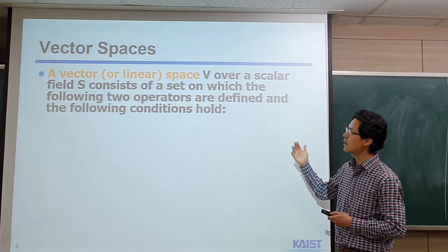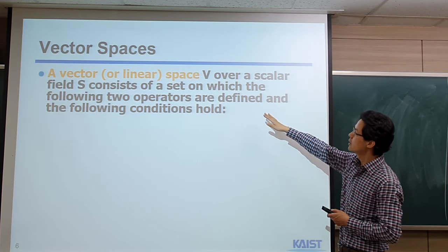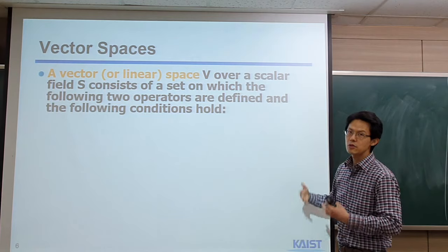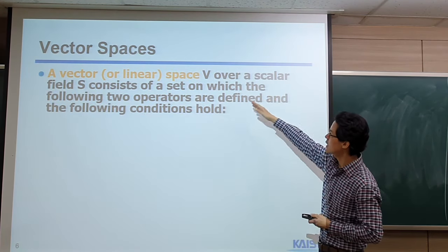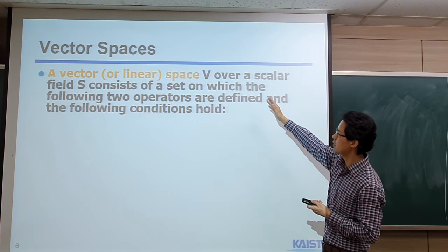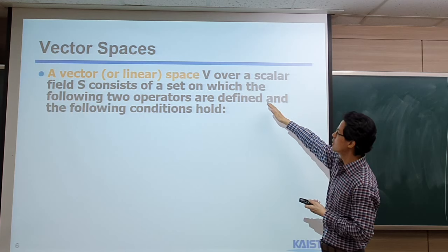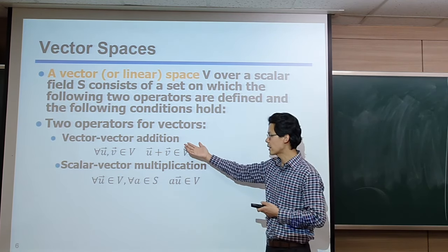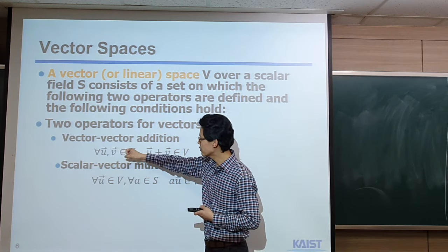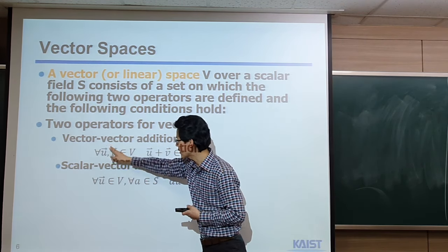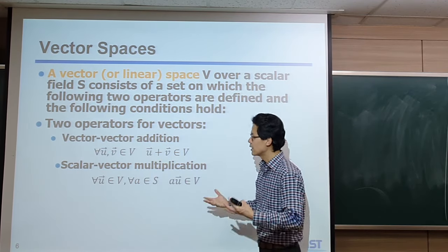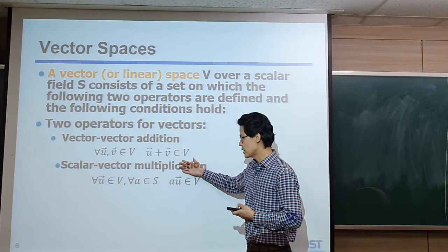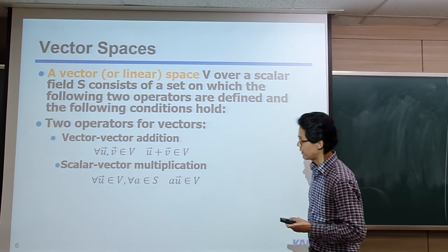Before answering the main question, I would like to talk about vector space. If you took linear algebra, you probably already know this. As a reminder, I will briefly talk about it. The vector space V over a scalar field consists of a set of values where we define two operations. For example, we can do vector-vector addition — we grab two vectors from the vector space, and the result is also within that vector space. Also, we can do scalar-vector multiplication, and the scaled vector is also within the vector space.